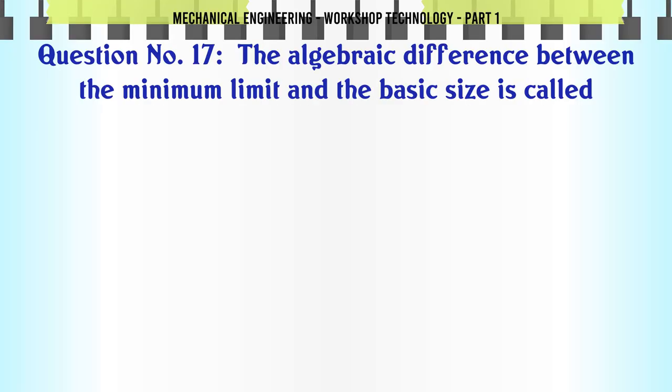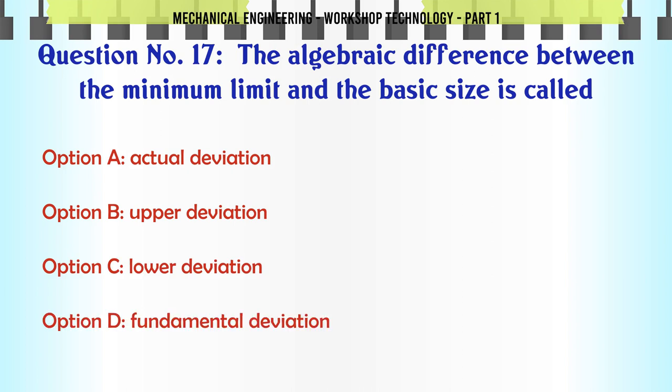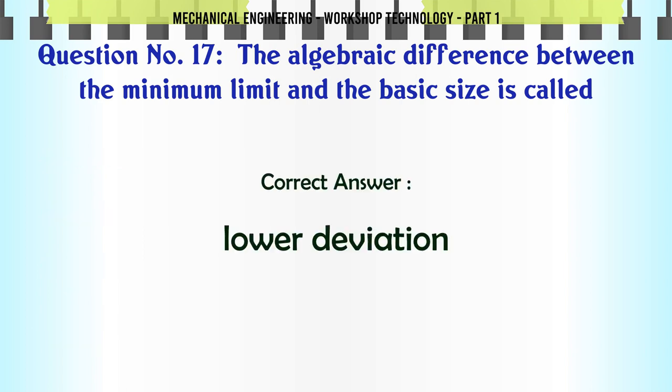The algebraic difference between the minimum limit and the basic size is called: A. Actual deviation. B. Upper deviation. C. Lower deviation. D. Fundamental deviation. The correct answer is: Lower deviation.